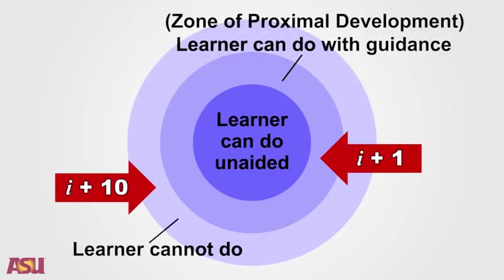On the other hand, maybe you have encountered the opposite problem. Welcome to Animals 101. Please repeat after me. This is a dog. Dog. This is a cat. Cat. In this situation, you understand all the concepts the teacher is explaining. So it is, simply put, boring. Krashen calls this I plus zero, meaning the input is completely understood by the student, and no learning is taking place.